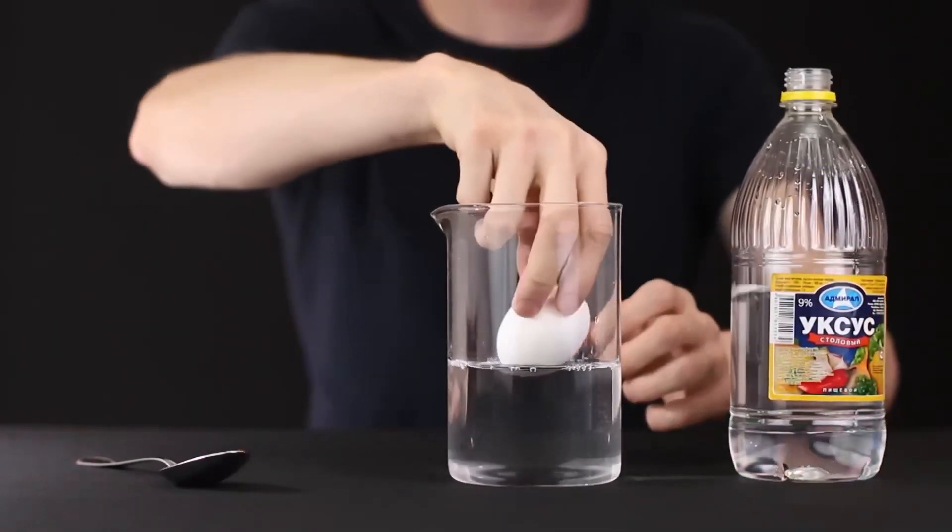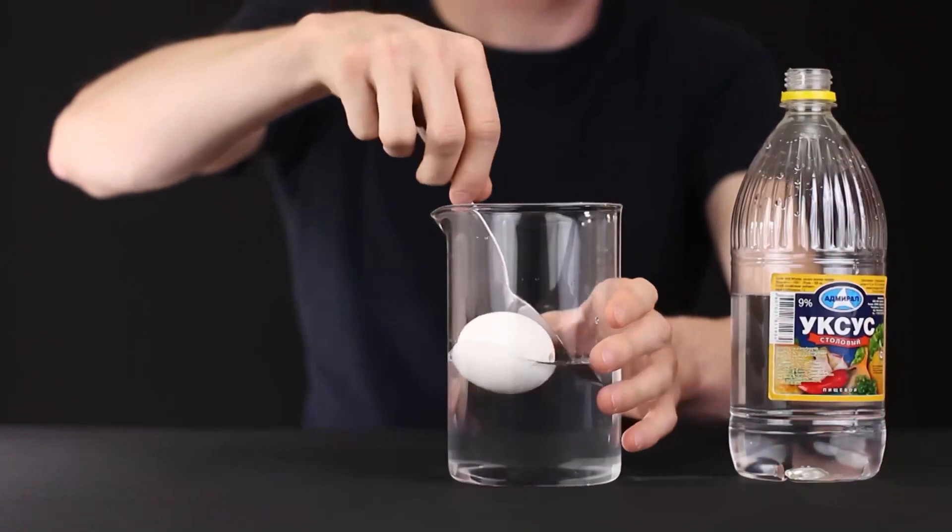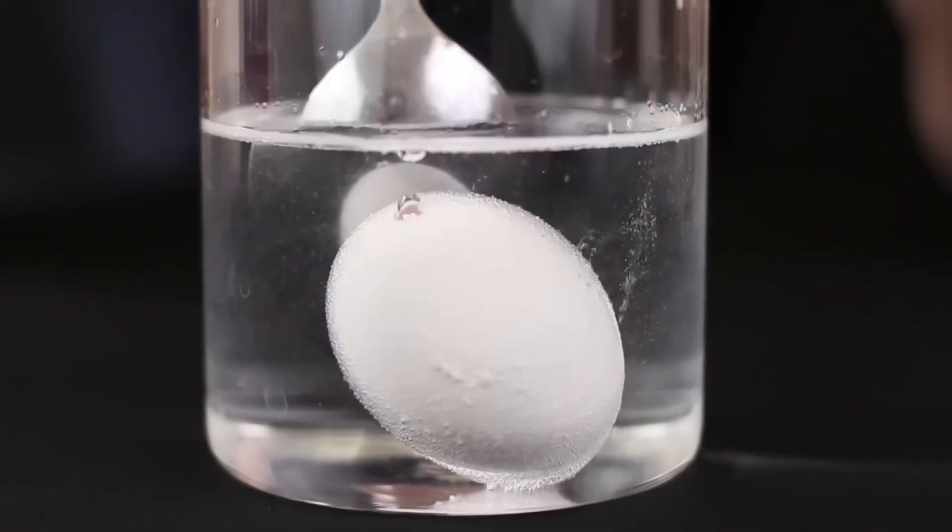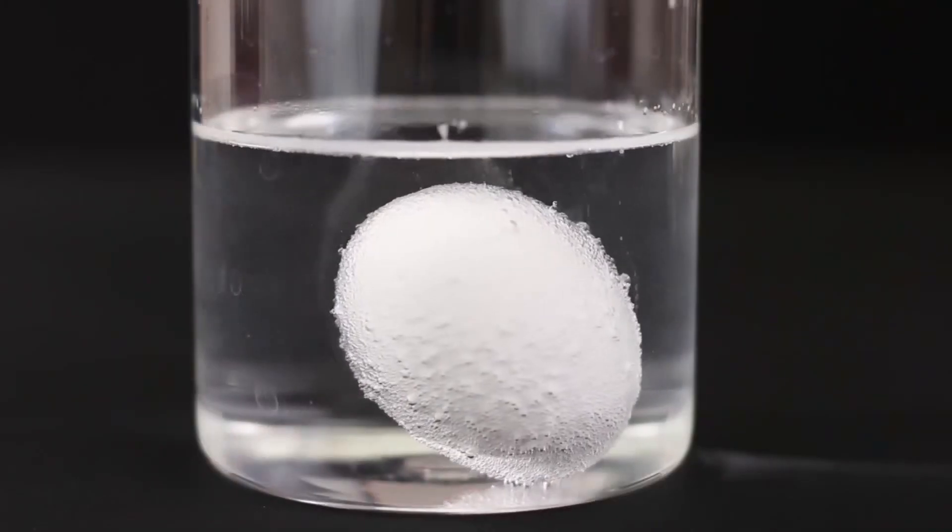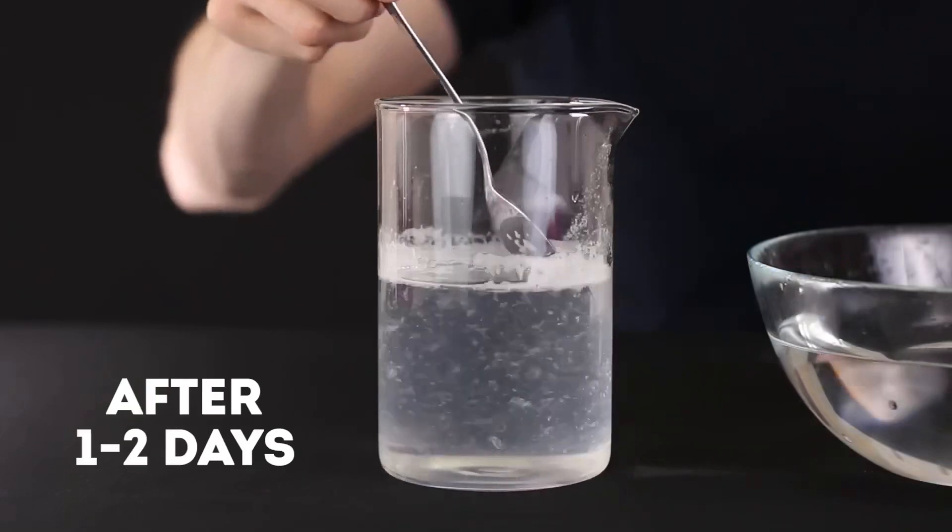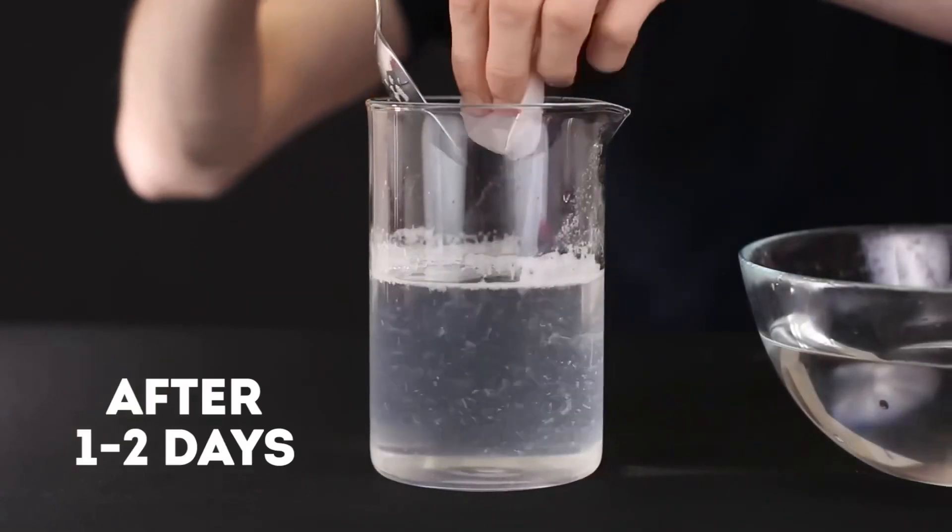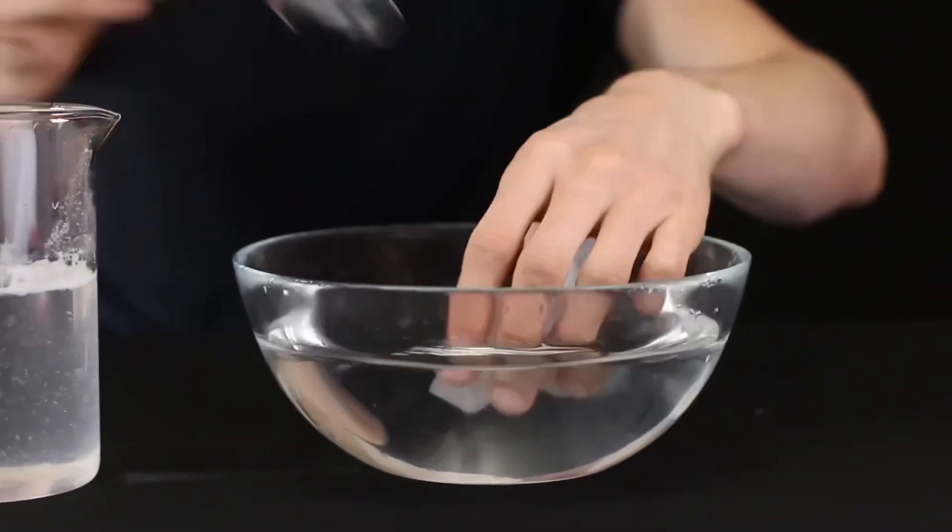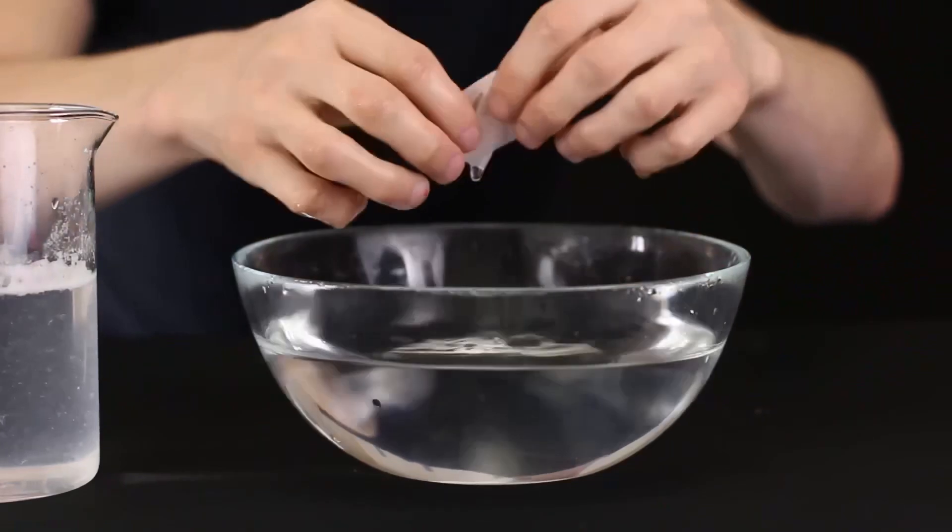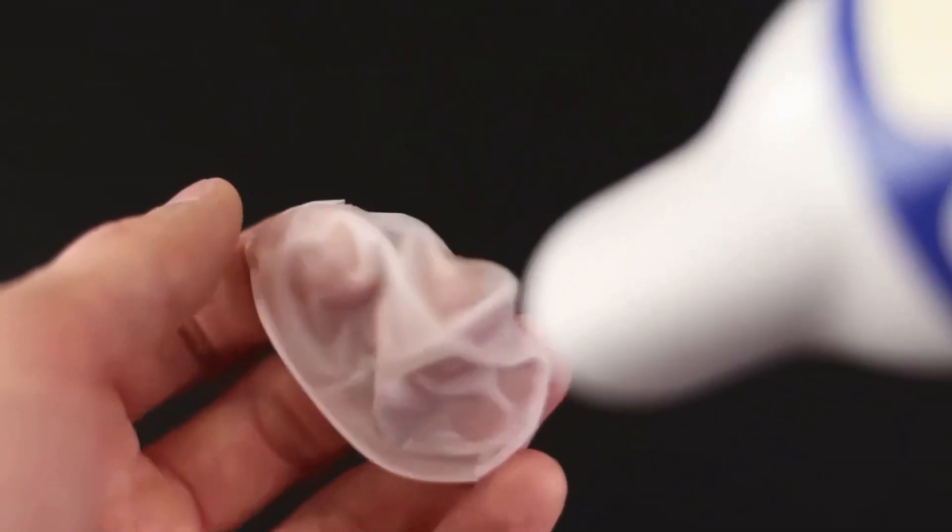Now, put the shell in a glass container filled with vinegar. Under its influence, calcium, which the most part of the shell consists of, dissolves. However, the inner membrane will remain intact. After one or two days, we will remove the membrane from the vinegar. Rinse it thoroughly to get rid of the precipitation. Now, dry with the hairdryer to remove all excess moisture.